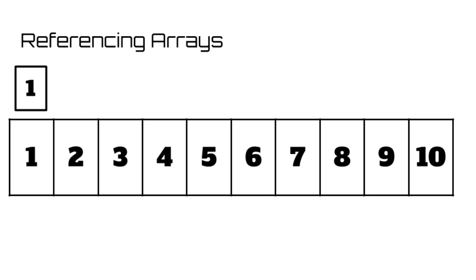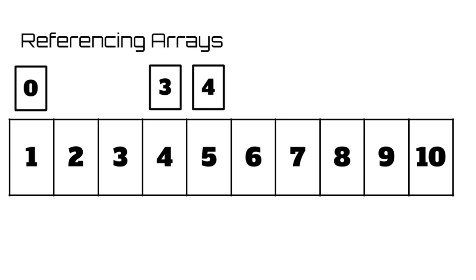Now you would think that the first integer in this array would be the first index, but that's actually not the case. Something very weird that programming languages do is refer to the first cell, or element as we call it, as the zeroth element in the array. That means that if we were talking about our array of numbers, the number four would actually be in the third index, five would be in the fourth, and so on.